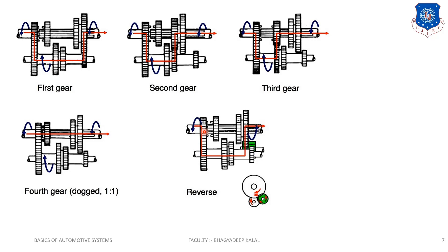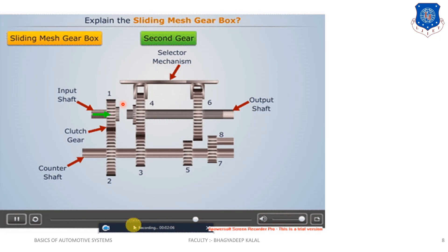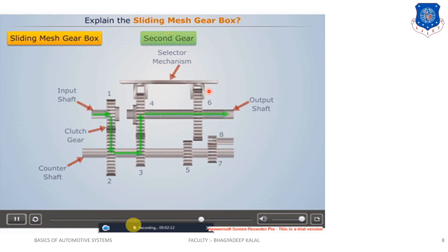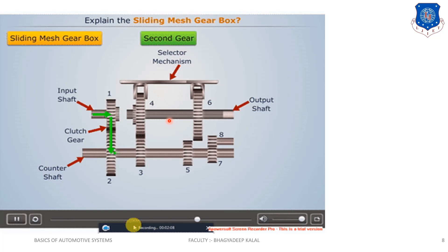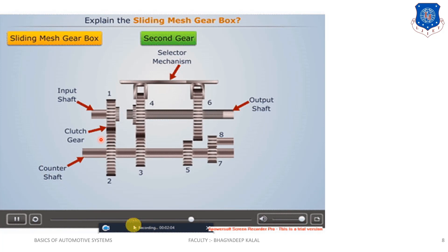Next we move to the constant mesh gearbox. This is an animation of the sliding mesh gear showing how the selector mechanism selects gears. The fourth gear is connected here. This is the output shaft or main shaft, the clutch gear used, counter shaft, and the second gear used here.